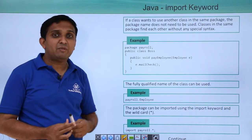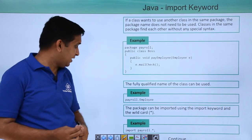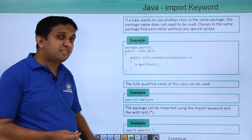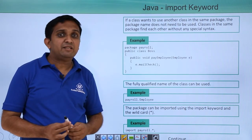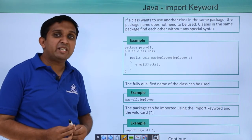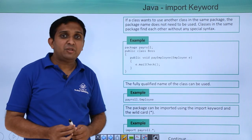If I want to import all the classes of payroll package, then I will simply say import payroll dot star. This star is the character that I will use. It will indicate I am importing all the classes of this particular payroll package.